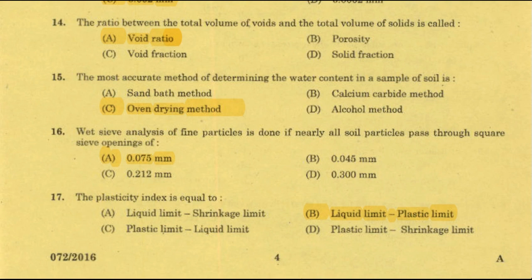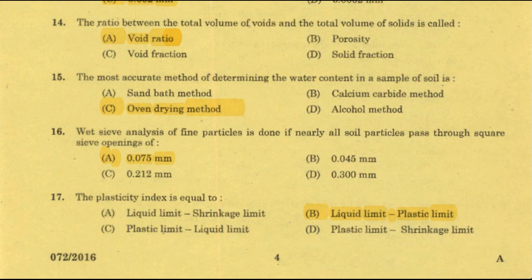The calcium carbide method uses a different principle: water in the soil reacts with calcium carbide to produce acetylene gas, and the pressure exerted by the acetylene gas on a diaphragm is measured, which gives the measure of water content.